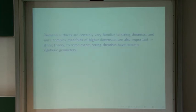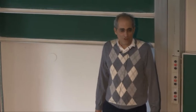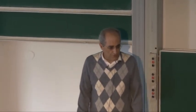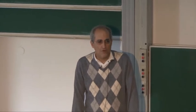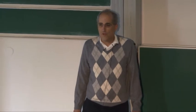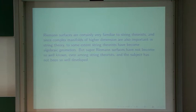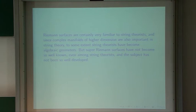Riemann surfaces are familiar to string theorists, and string theorists have even become accustomed to algebraic geometry in higher dimensions — complex manifolds of higher dimension are also important in string theory, for example complex 3-manifolds in which one might compactify from 10 to 4 dimensions. So string theorists have to some extent become algebraic geometers. But super-Riemann surfaces have not become so well known even among string theorists, and the subject has not been so well developed. One might say that string theorists tend to be bosonic algebraic geometers.